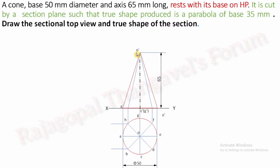Whenever the true shape is parabola, you have to remember one condition: if the true shape of a cone is a parabola, the section plane must be parallel to any one of the end generators. O dash A dash is one end generator; O dash E dash is another end generator. So the section plane must be parallel to any one of the end generators if the true shape of section is given as parabola. In this question, they have given one more additional data — the base of the parabola as 35 mm — so you have to fix that base in the top view.